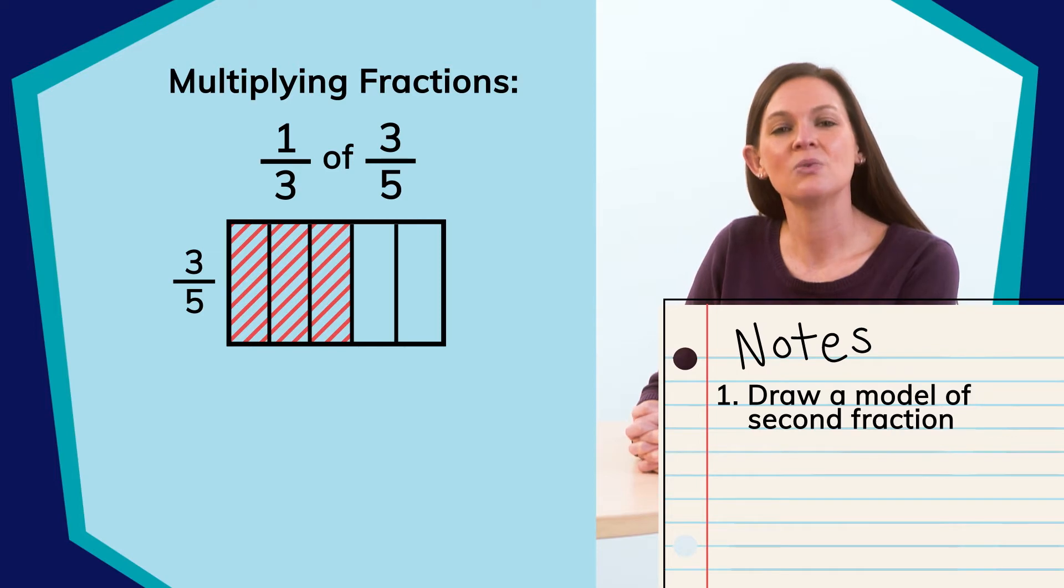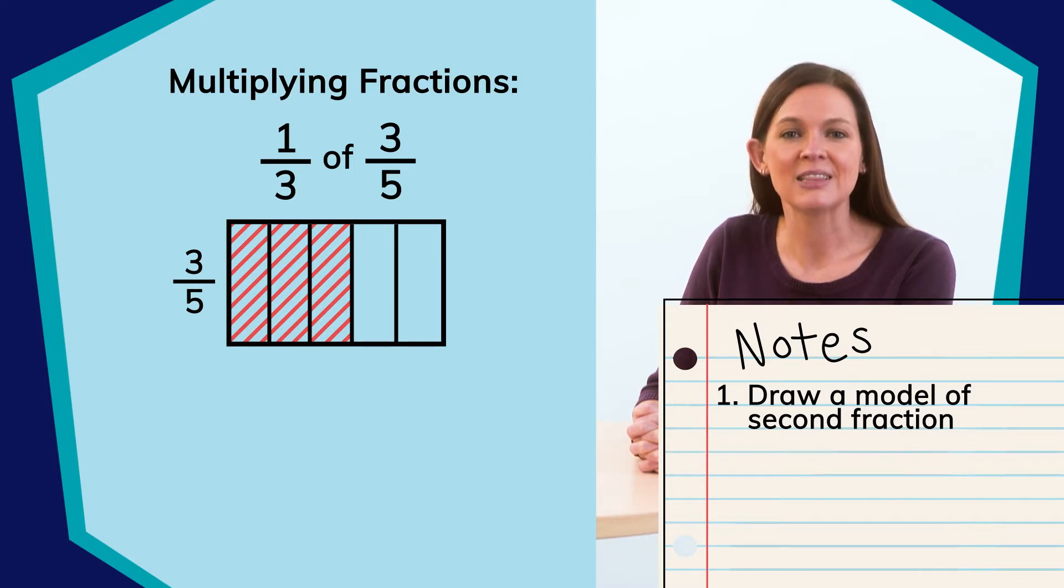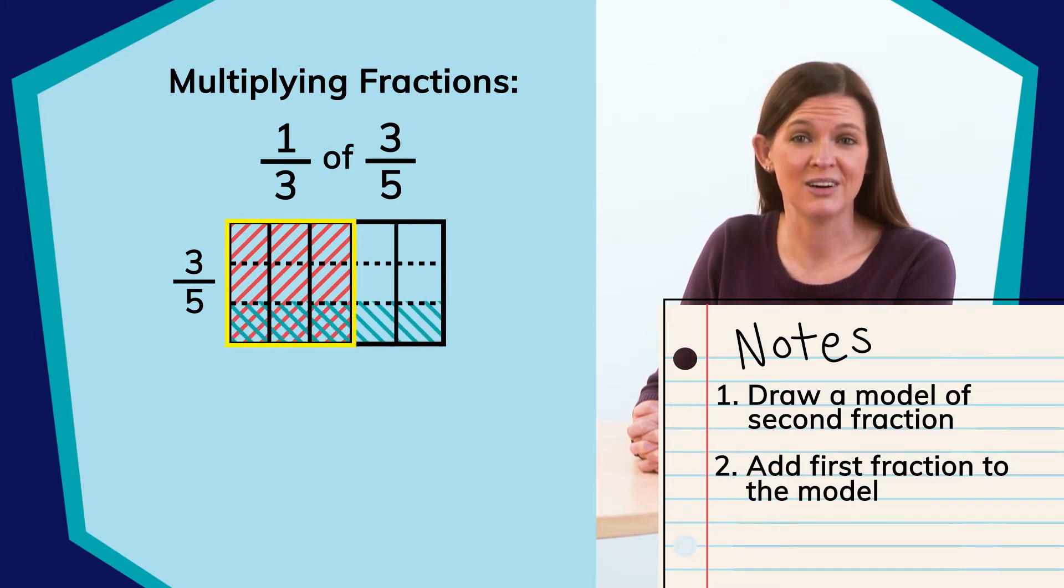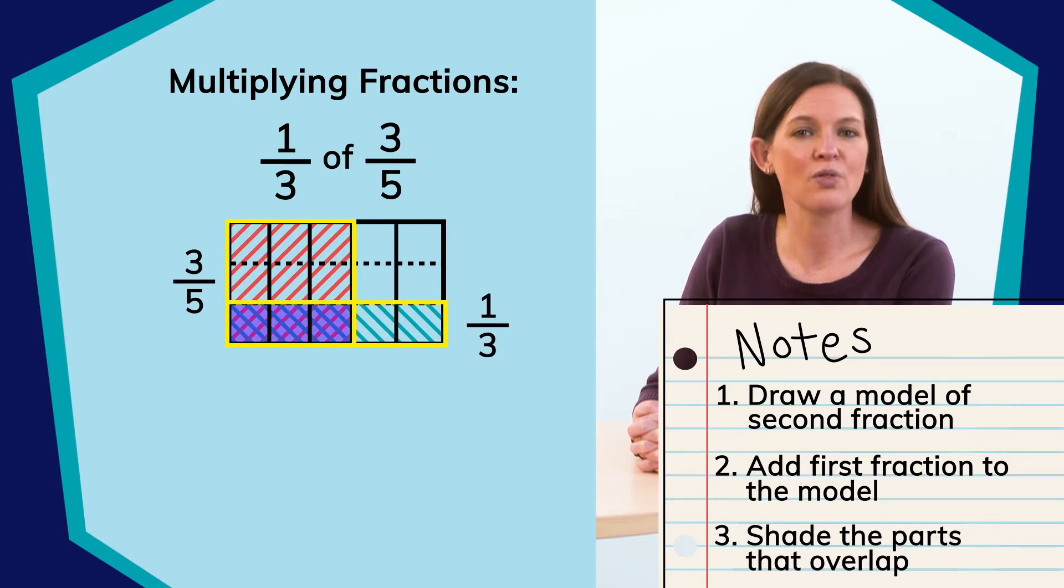Now, we need to find one-third of three-fifths. Thinking about this, I can divide this same whole into thirds the opposite way and shade one of them. So this shaded region of the area model represents three-fifths. And this shaded region represents one-third. So what would the overlapping portion of the area model show?